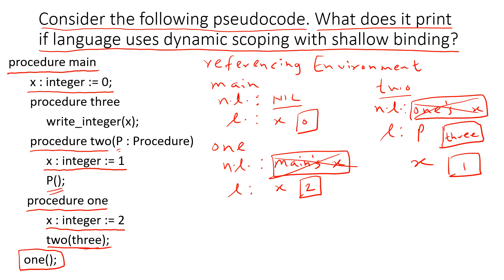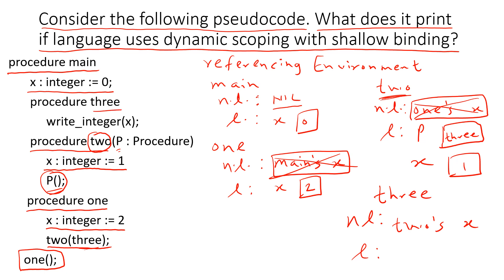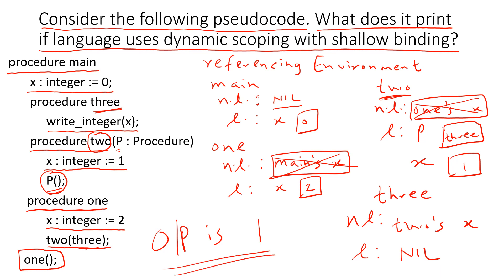Now we call procedure p — we know p means procedure 3, so 3 is actually called. We create a referencing environment for 3. For the non-local compartment: at the time 3 is called, execution control is in procedure 2, so everything from 2 is copied into 3's non-local compartment, giving us 2's x. Procedure 3 does not have any variables declared locally, so its local compartment is nil. When we print x in procedure 3, it accesses 2's x, which is 1. So with dynamic scoping and shallow binding, the output is 1.